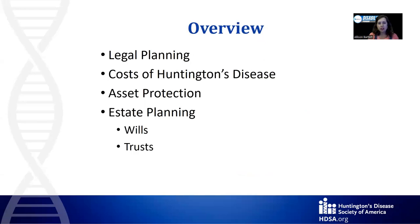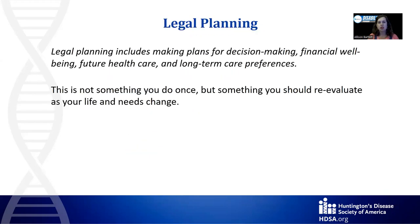Today I'm going to cover legal planning, costs of Huntington's disease, asset protection, and estate planning — specifically wills and trusts. Legal planning includes making plans for decision-making, financial well-being, future healthcare, and long-term care preferences. This is not something you do once, but something you should reevaluate as your life and needs change. This is a really important topic because of the nature of HD as a progressive disease and all of the things that HD families can find themselves struggling with throughout this process.